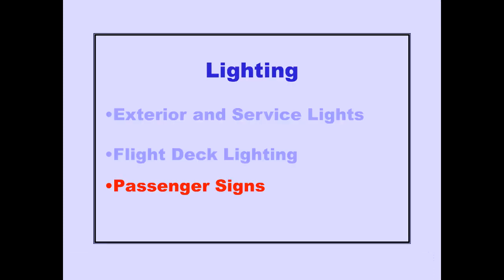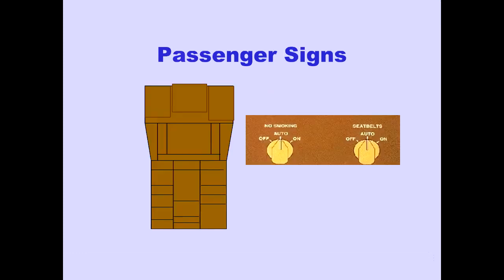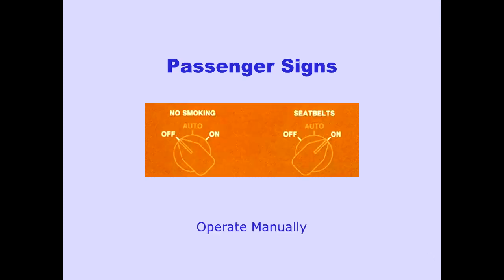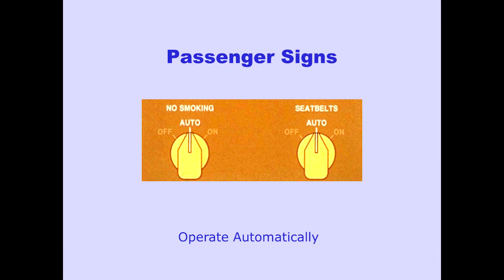Now let's look at passenger signs. Controls for the passenger no smoking and fasten seat belt signs are located on the aisle stand. When the selectors are positioned off or on, the no smoking and seat belt signs are operated manually. When the selectors are in auto, the signs are operated automatically.